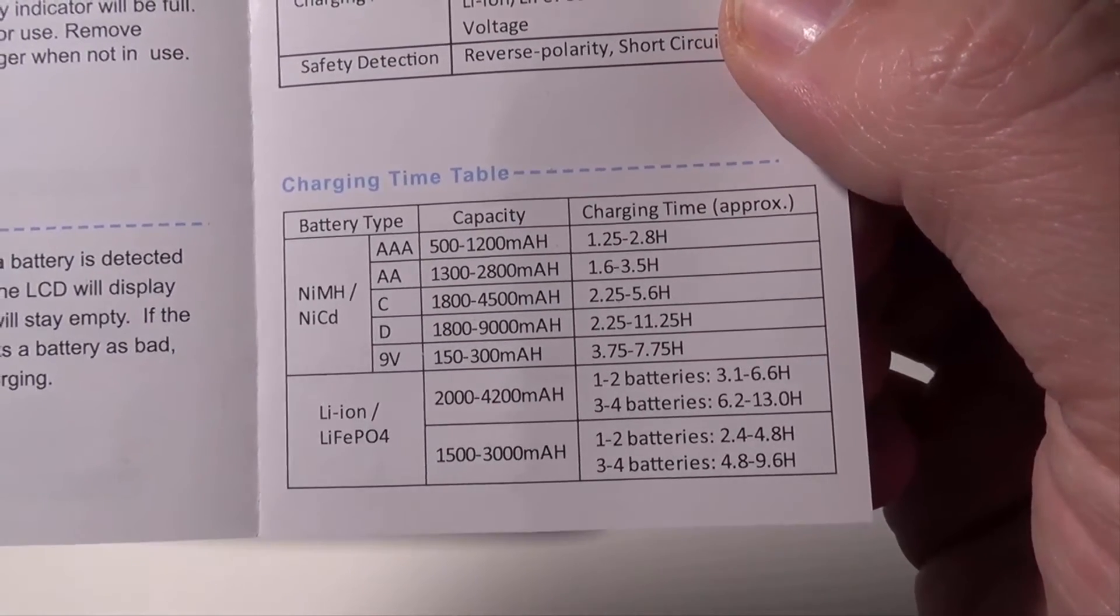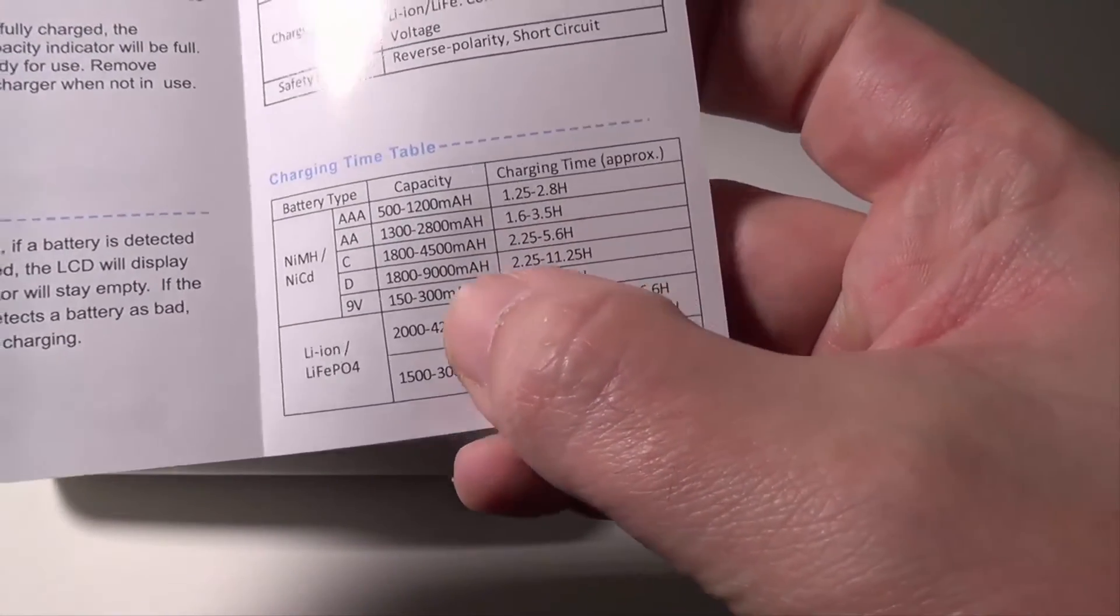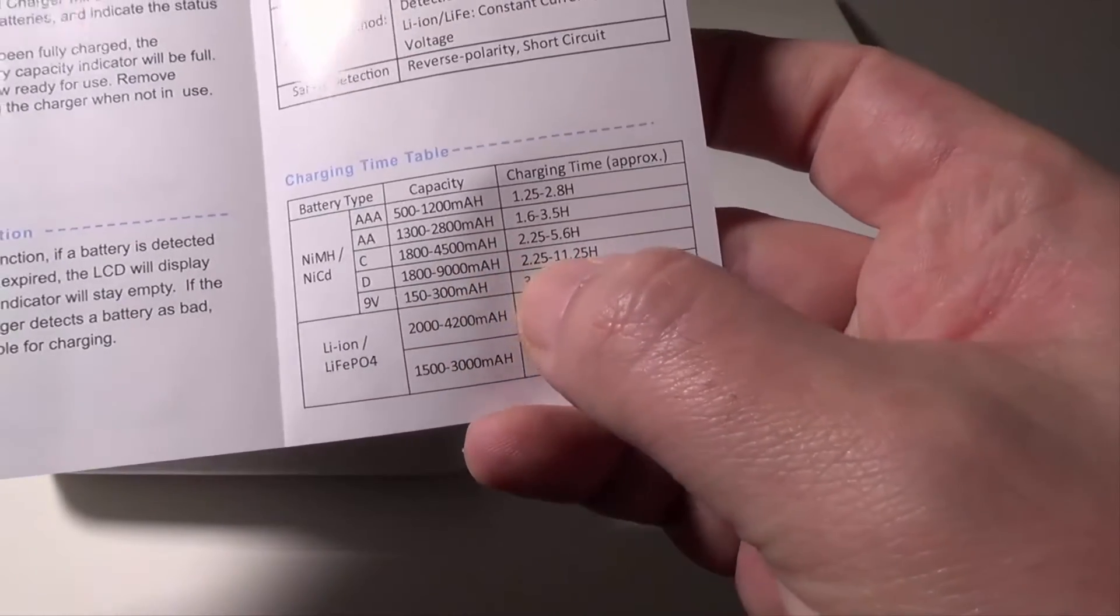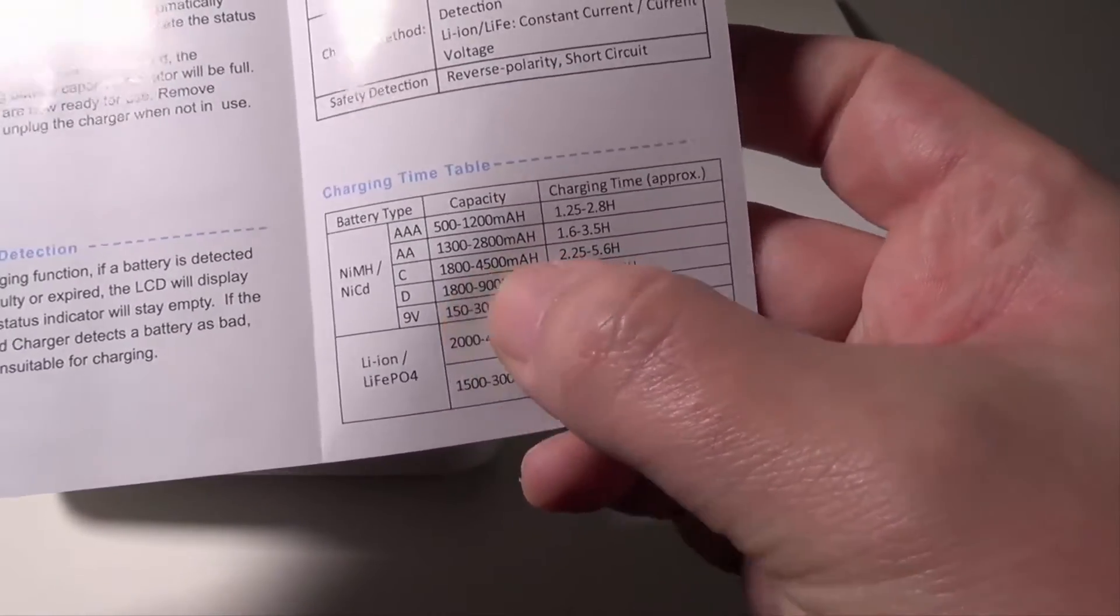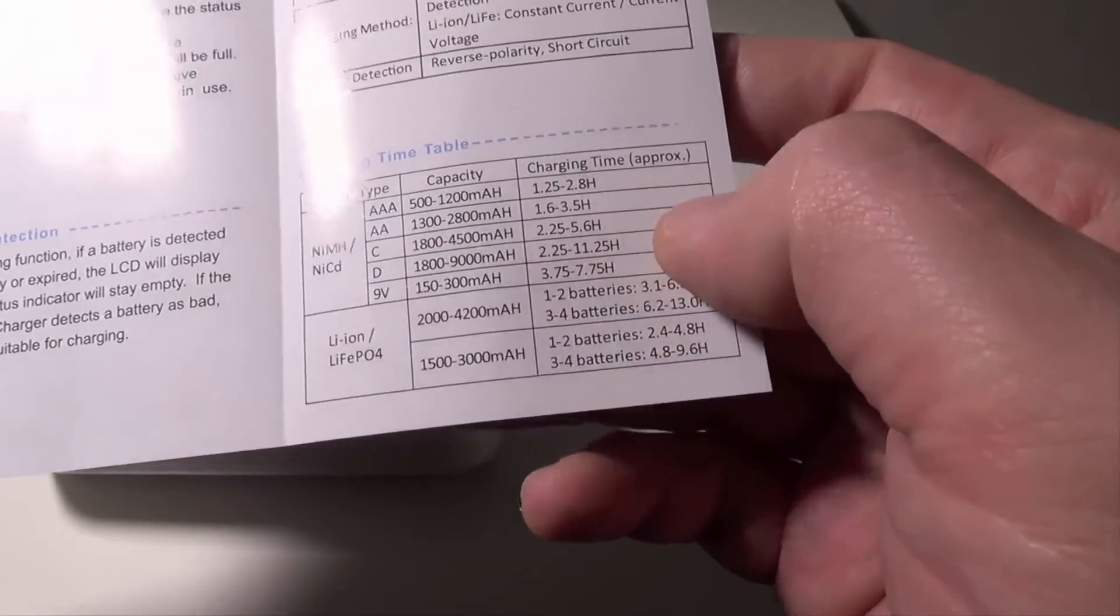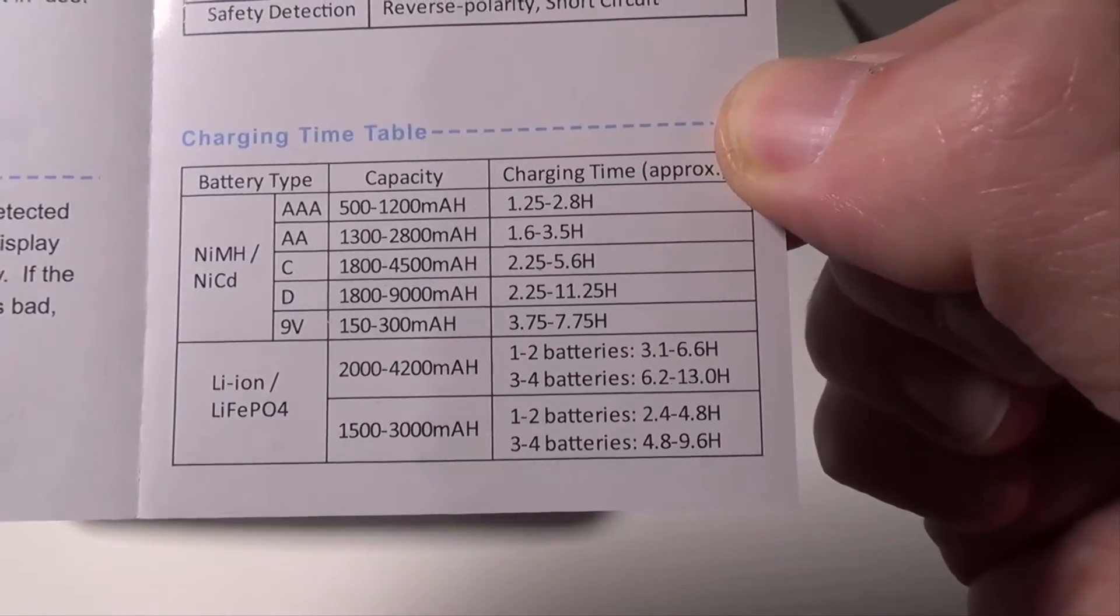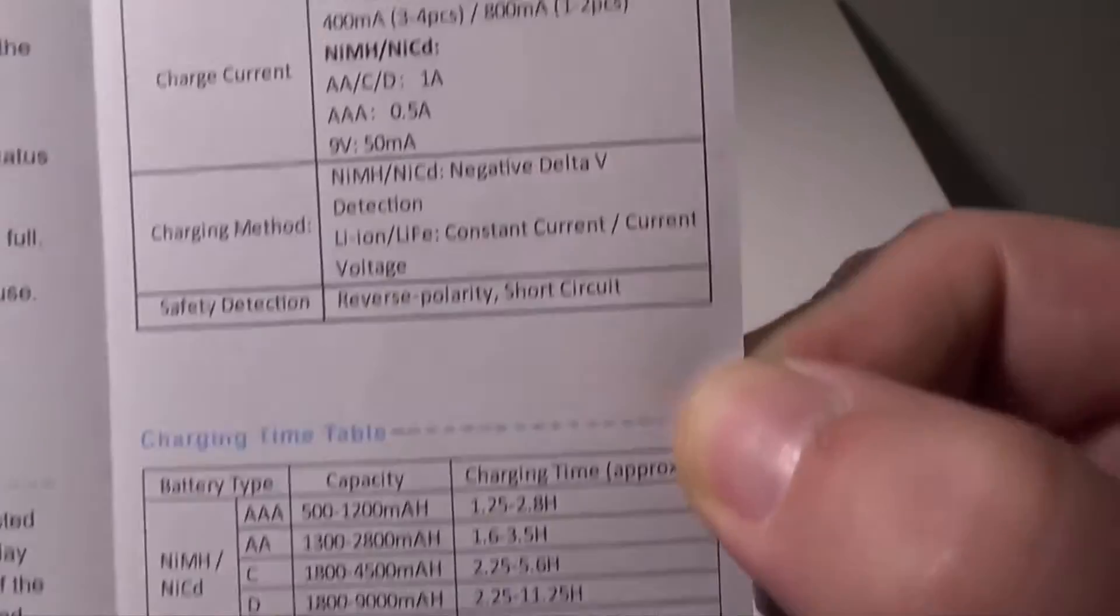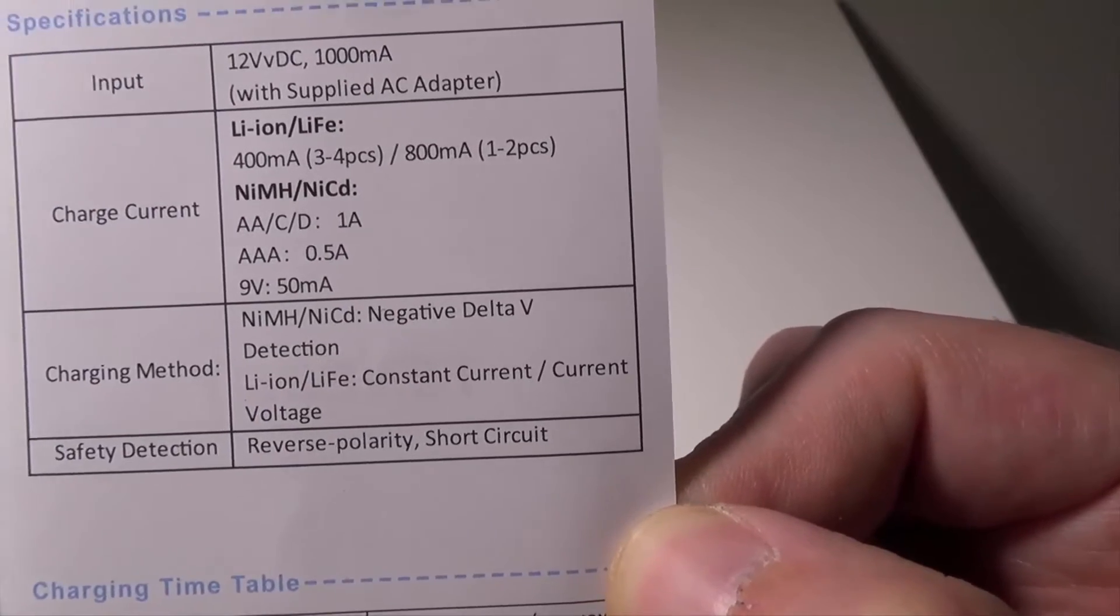Then it goes up from C and D. Your 9000 milliamp D batteries are going to take up to 11 hours to charge. Your 4500 milliamp C batteries will take up to 5.6 hours and so on. I'll leave this up here if you want to freeze it and check it out. And then your charging method inputs are all right here so that you can check those out as well.